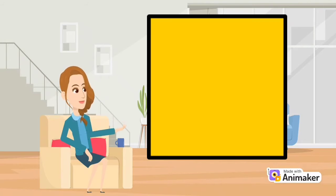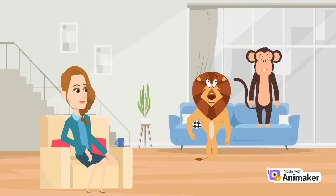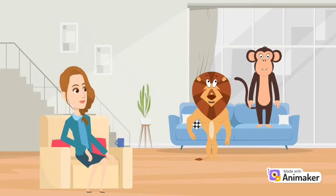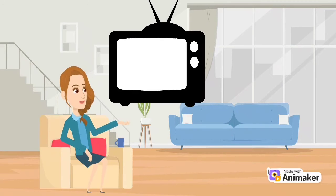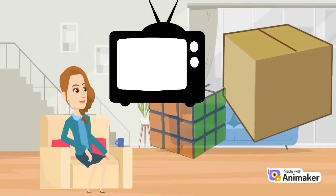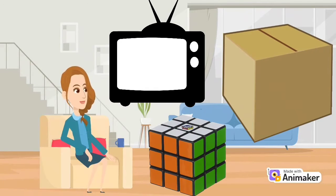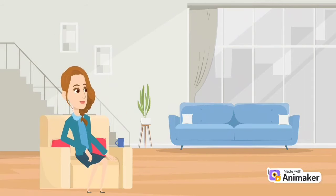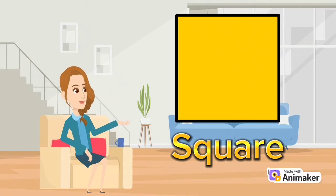How about this? Square. Very good. Now, can you give me the name of things similar to a square? TV. Box. Rubber cube puzzle. Very good. A square is a flat shape with four sides.